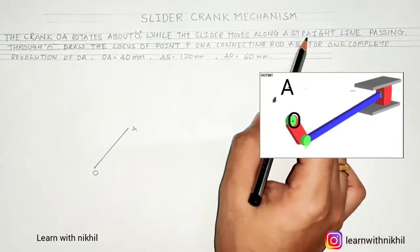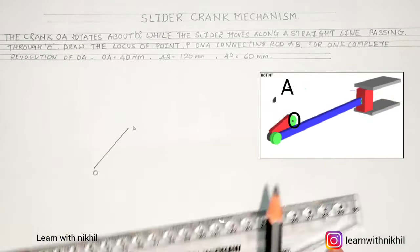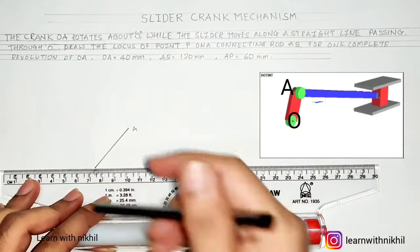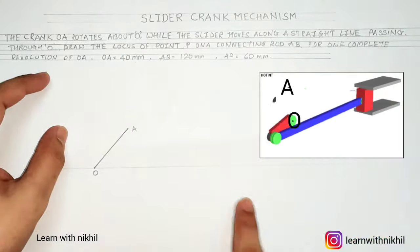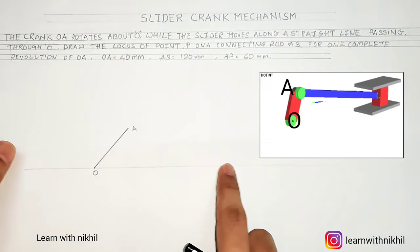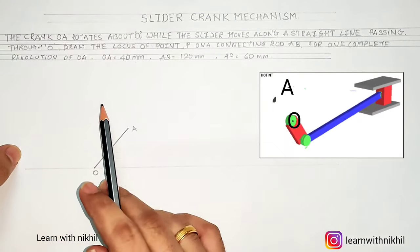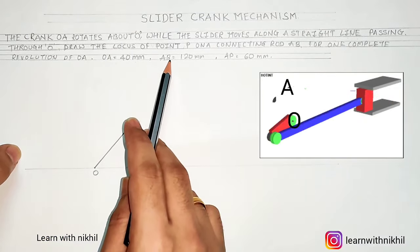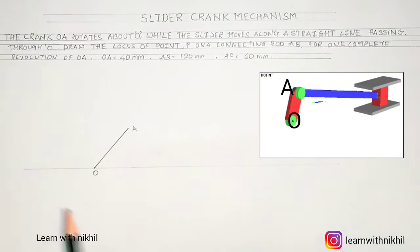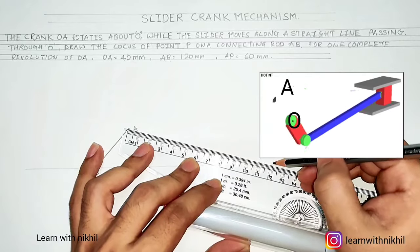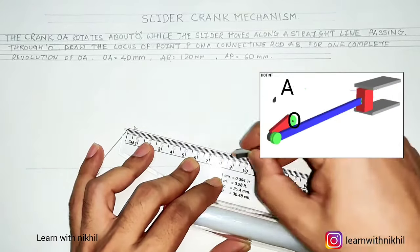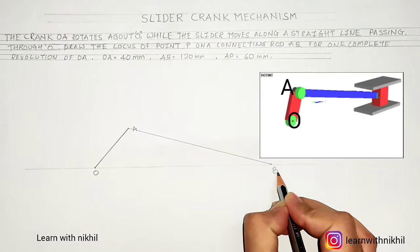So OA is nothing but a crank, so A moves in a circular motion. Now we have a straight line passing through O, so the slider moves on that straight line and the distance AB is 120 mm. So we will mark A and B as 120. This is a second rod, AB.